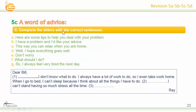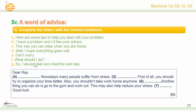Complete the letters with the correct sentences. Number one: B. Number two: G. Number three: F. Number four: E. Number five: A. Number six: C. Number seven: D.